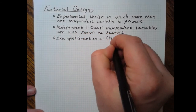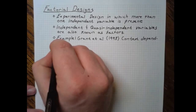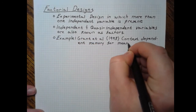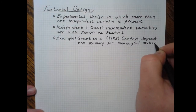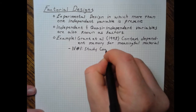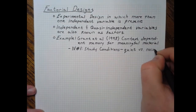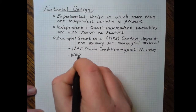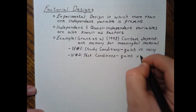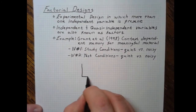To pull an example from the literature, let's look at Grant et al. from 1998, which essentially demonstrated encoding specificity — the context that you learn something in and then try to recall something in matters. Their first independent variable was the study conditions: did you study in a quiet environment or in a noisy environment? Their second independent variable was whether you took a memory test in a quiet environment or a noisy environment over the material you studied.